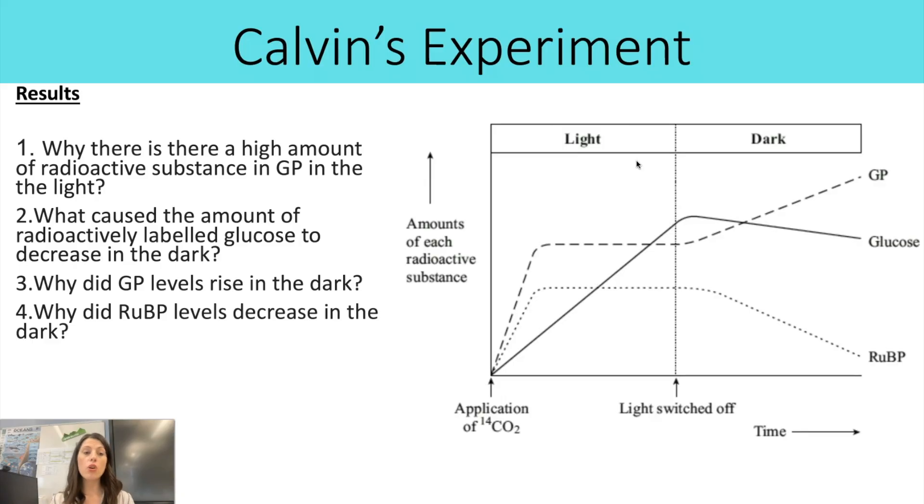The next question, what caused the amount of radioactivity labelled glucose to decrease in the dark? So the first thing you've got to remember is in the Calvin cycle, where is the glucose coming from? And in every turn of the Calvin cycle, one of the carbons from the TP goes towards making a hexose sugar such as glucose. So if the glucose is decreasing, that must mean the amount of TP is decreasing. So we need to have a think about why that might be the case.